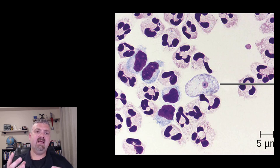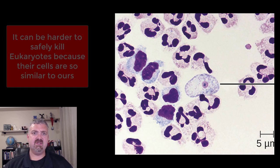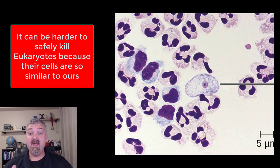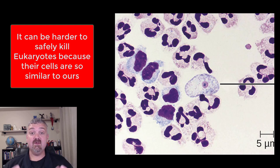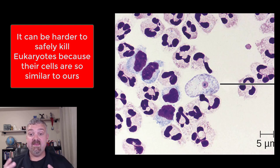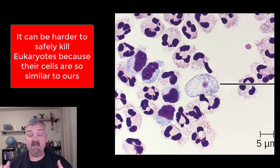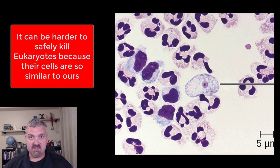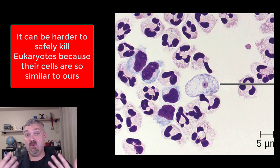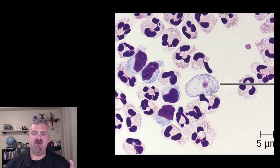Something we have to pay the most attention to: if you're trying to kill a pathogen that's a eukaryote, it is much more difficult. That's because these cells are eukaryotes — and so are your cells. We have to find chemicals that, kind of like using chemotherapy to kill cancer, can kill the pathogen without harming the host. It's a lot easier when you're dealing with bacteria, which are so much different from us.